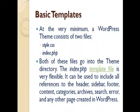The basic templates: at a very minimum, a WordPress theme consists of two files — style.css and index.php. Both of these files go into the theme directory.